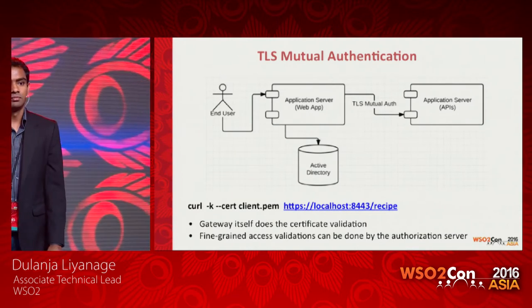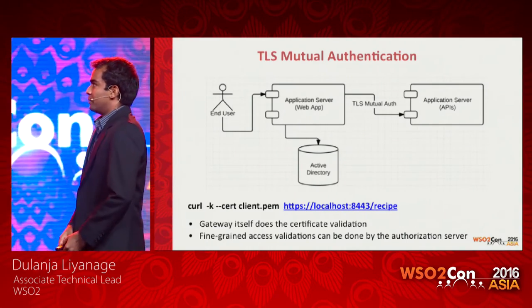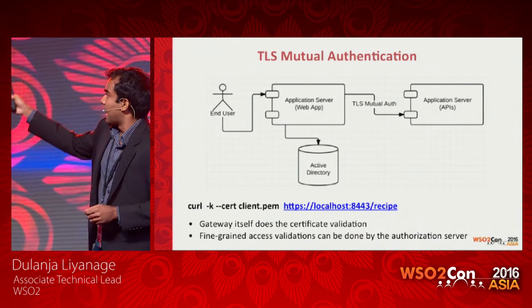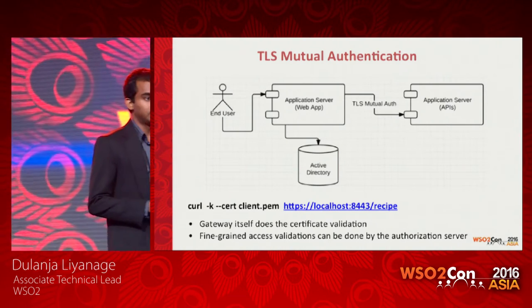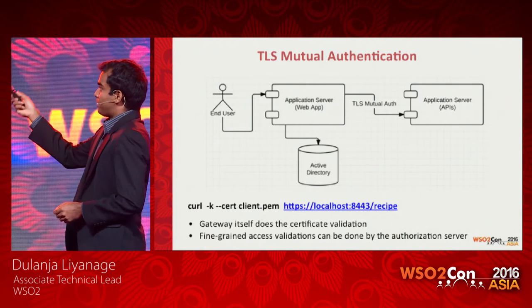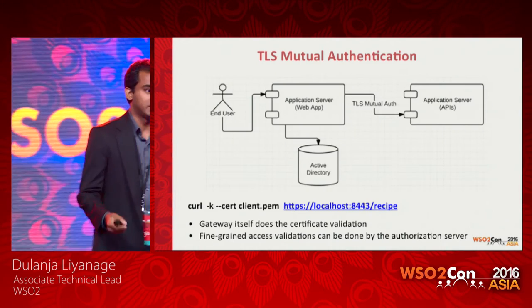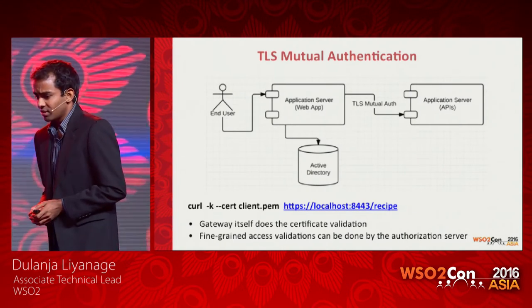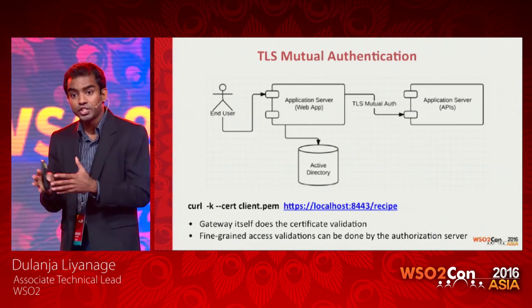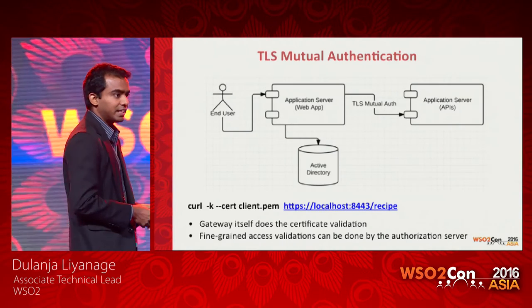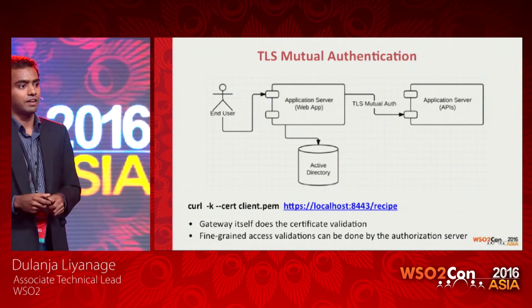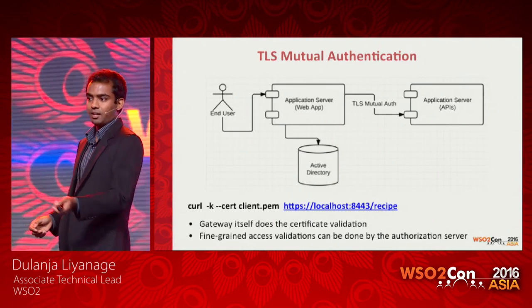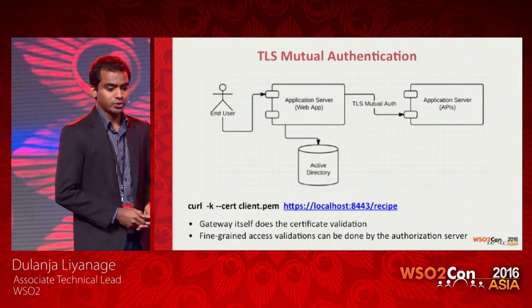Then we have another traditional mechanism: TLS mutual auth. This is mainly used within a trusted subsystem. There's an application server acting as the client, and another application hosting APIs — the API gateway. The API gateway trusts the client; they are in the same trusted subsystem. The client uses certificates to authenticate with the API gateway. The gateway performs certificate validation, and if you require further fine-grained authorization, the authorization server can do that after the initial SSL validation. We don't have this out of the box, but it has been done as custom handlers for several customers.